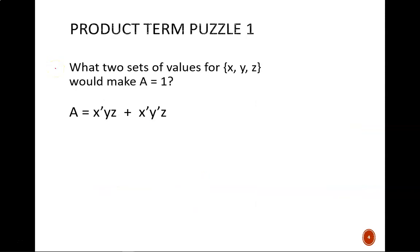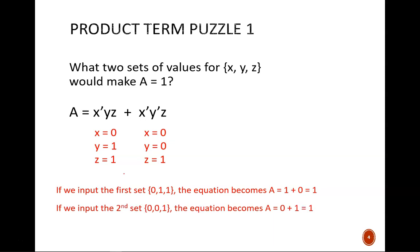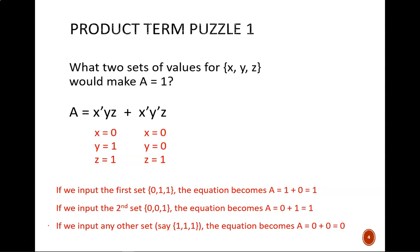Let's build on those ideas. Here we have two product terms with an OR in between them. Therefore, there will be two special sets of values that cause A to equal 1. The first product is true only if x equals 0, y equals 1, and z equals 1 — x must be 0 because it is being complemented. Similarly, the second product is true only if x equals 0, y equals 0, and z equals 1. If one of these product terms is true, it would make the final output A become true, since 1 ORed with anything produces a 1. But if we chose any other set of inputs, each product term equals 0, and we get 0 OR 0, which produces 0.